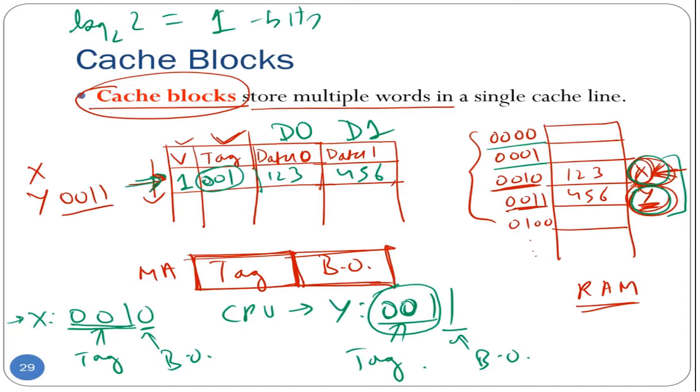Now the question is, once there is a hit in this row, there are two data items here. How do we know whether we are looking for 123 or 456? So this is where this block offset will come into play. So the block offset is one. Note that this is the first data item here.